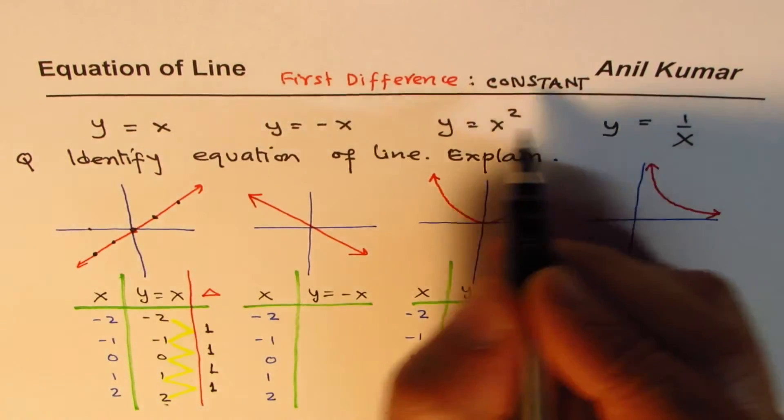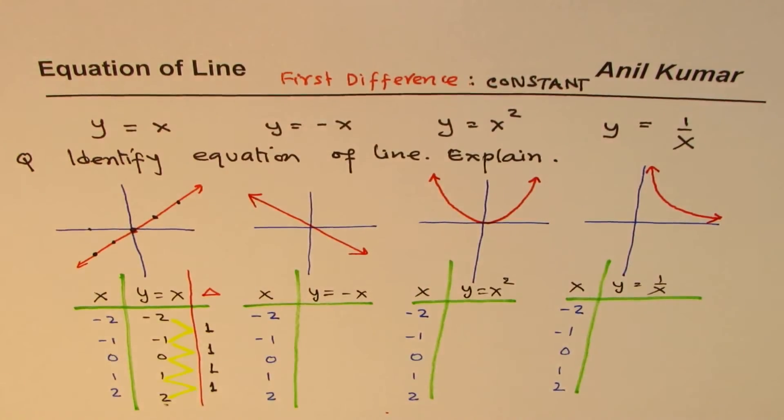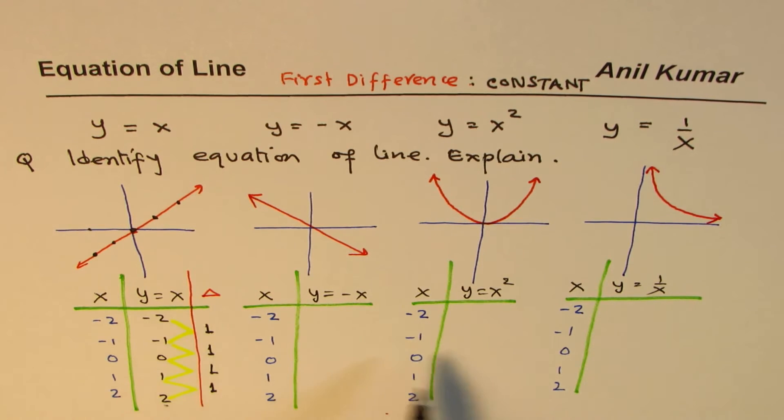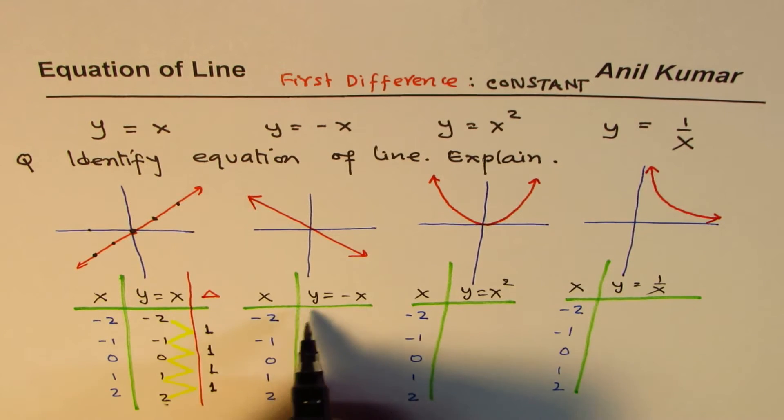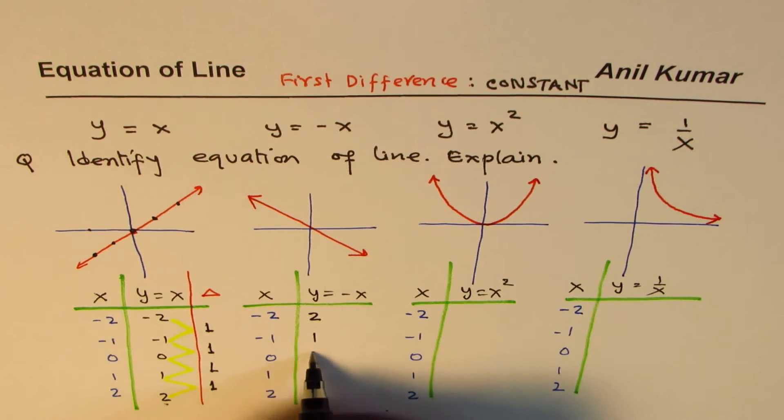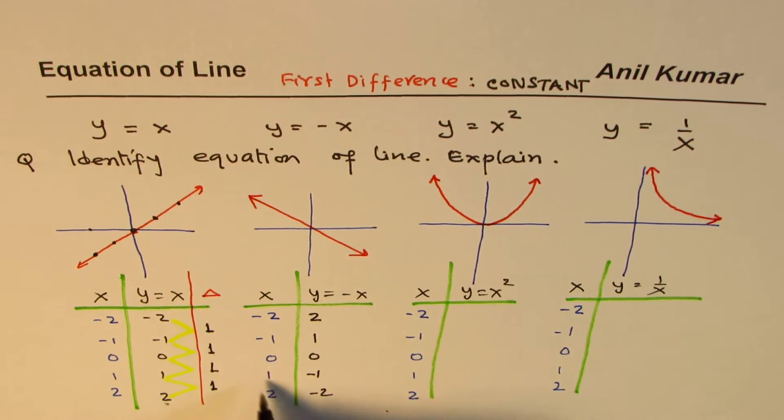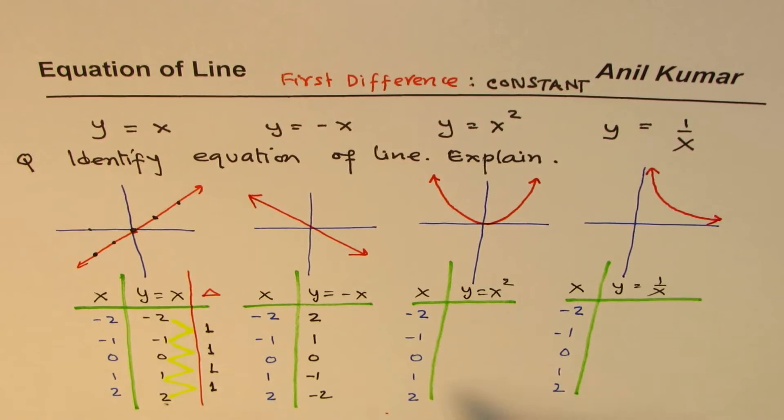So we see that first difference is constant. Then it is a line. First difference is constant is another way to explain that the equation represents a line. You can do this check for all of them after placing these values. Anyway, let's continue with the next one. Minus of X. So minus 2 becomes 2, this becomes 1, this is 0, this becomes minus of whatever value.